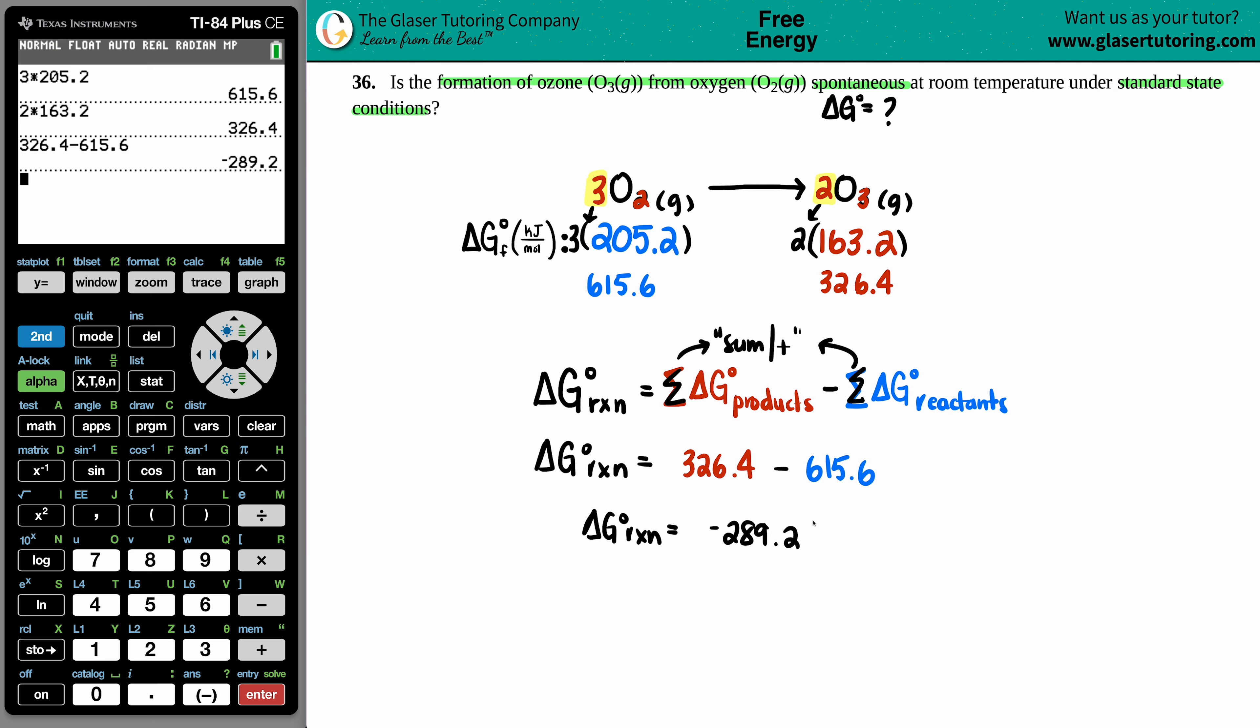Just know that when you're doing it this way, the delta G for reactions are always in kilojoules. Your delta G formation is in kilojoules per mole. But since we're multiplying by your coefficients, those are mole values. So the moles cancel out and you're just left with kilojoules.